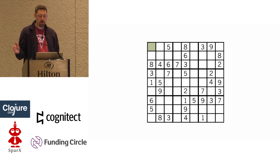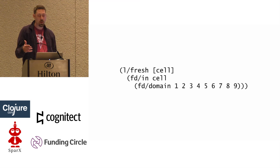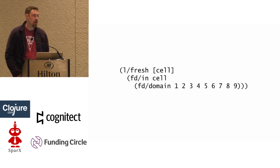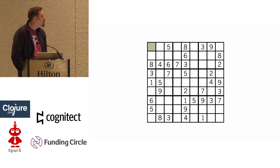If we had core.logic, how would we do this? You can just write it almost in English in core.logic. You fresh up a new logic variable called cell, then say that cell has exactly one value in the domain of numbers one through nine. This is really easy in core.logic, but we're in SAT — we only have booleans. How can we do this?